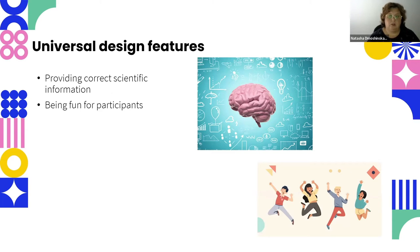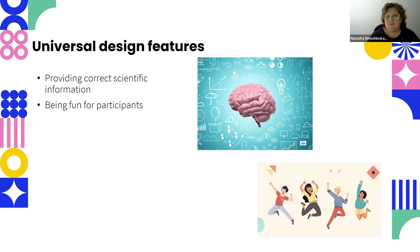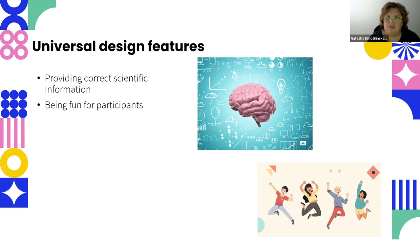We came up with two universal design features that apply to any type of informal activity — not only STEM, but specifically for STEM. These are prerequisites for everything else. The first is providing correct scientific information. Even though it sounds very intuitive, it must always be verified — whether it's a museum exhibition, a podcast, or any other activity — because incorrect information misleads people.